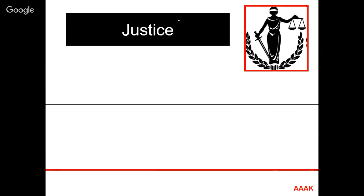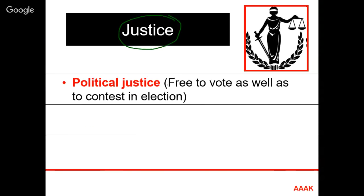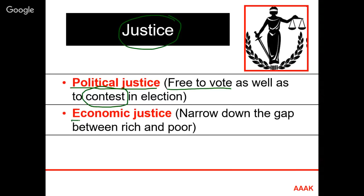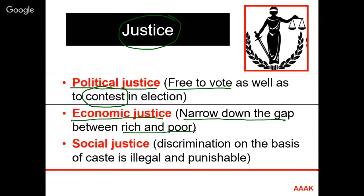Justice has various dimensions. Political justice means everybody is free to vote and free to contest in an election — that is a political right of every person. Economic justice means every person has an economic right, involving narrowing the gap between rich and poor; everybody is entitled to basic needs. Social justice means everybody has a right against social discrimination — discrimination based on caste or any other consideration is illegal and punishable as per the constitution.